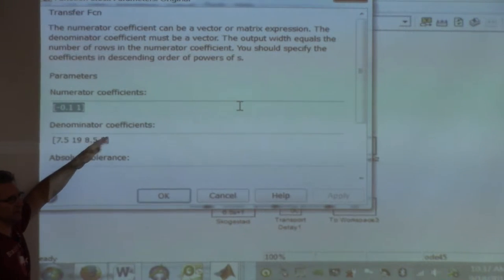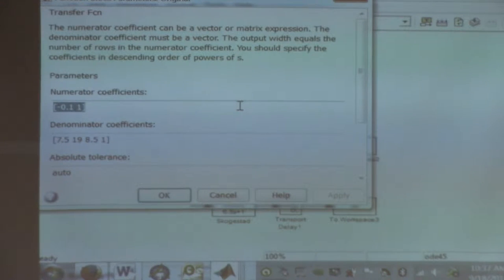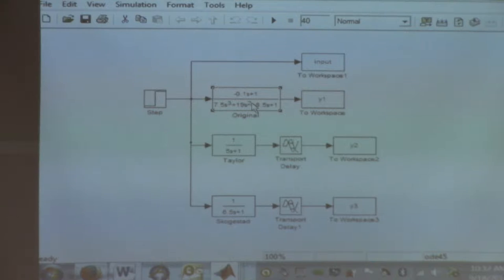s cubed, s squared, s, s to the 0. That's all you have to do. And what's kind of nice is when you're done doing it, it shows you what it looks like. You make sure you like the way it looks, the actual numbers.